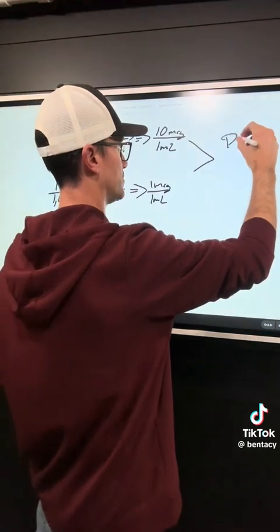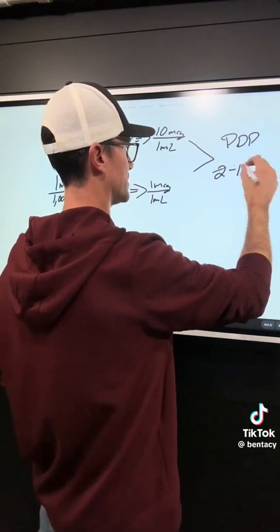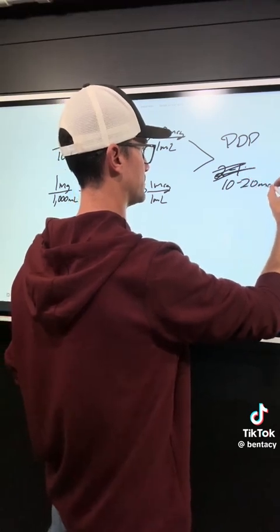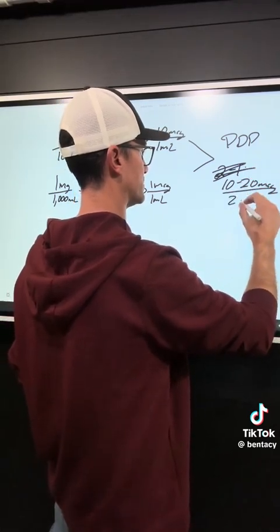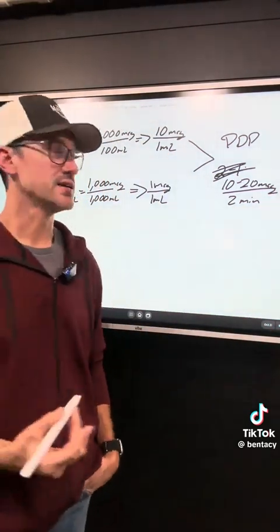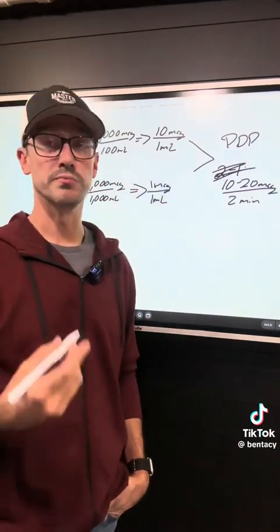So for a push dose pressor we need to give, sorry wrong again, 10 to 20 micrograms every two minutes. So if we're mixing that in a 100 milliliter bag, that means we need to give one to two milliliters of that.